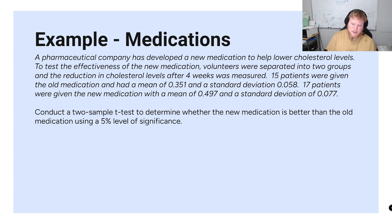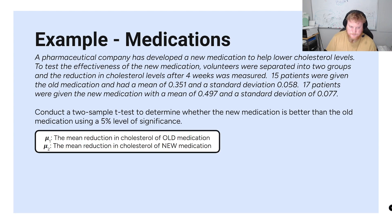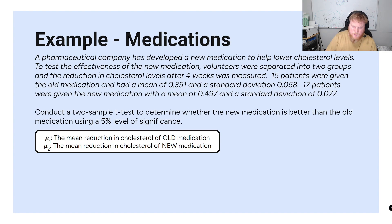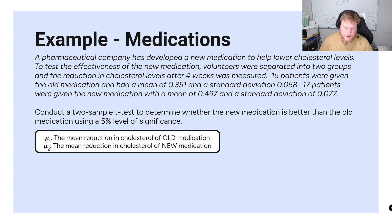We're conducting a two-sample t-test to determine whether the new medication is better than the old medication using a five percent level of significance. It's helpful to label your mus: mu sub one is the mean reduction in cholesterol of the old medication, x-bar sub one is the sample mean of the first group, s sub one is the standard deviation, and n sub one is the sample size.